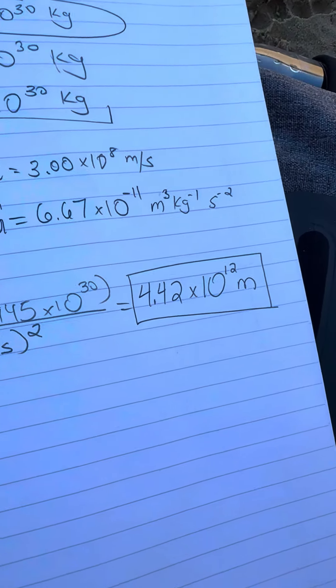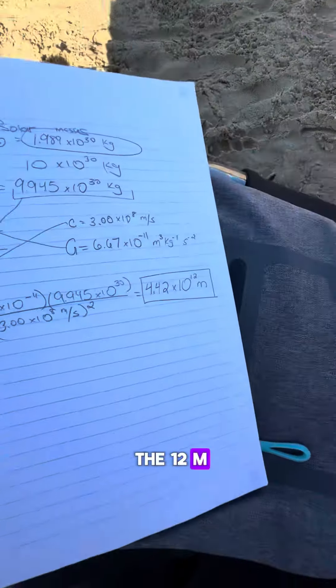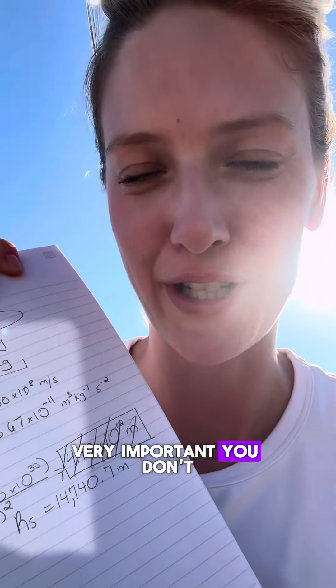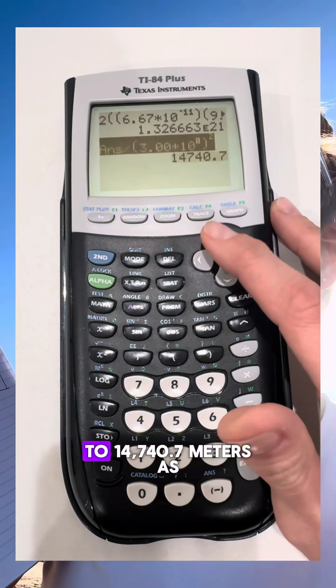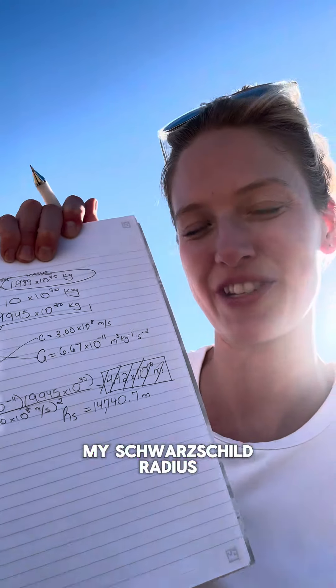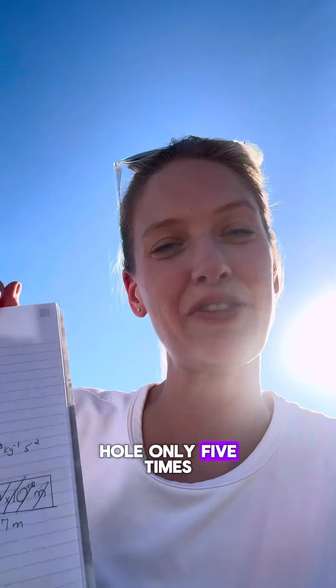After I put that into the calculator, I end up with 4.42 times 10 to the 12th meters. Oh no, no, no, I forgot to square my speed of light. Very important you don't want to forget that. My answer came out very different and it came out to 14,743.7 meters as my Schwarzschild radius.